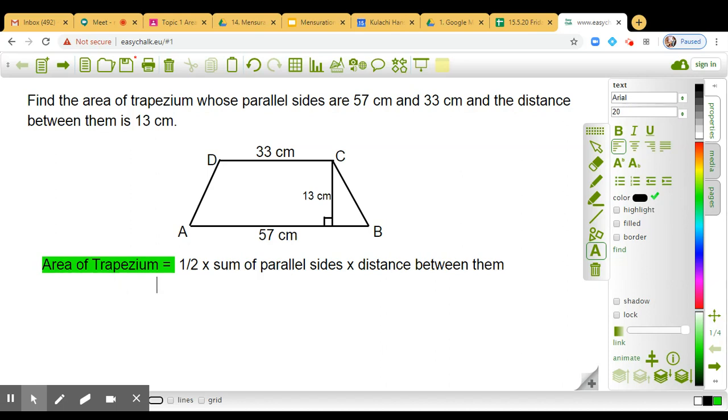Now you tell me, what are the dimensions of the parallel sides here? So half into 33 plus 57 into the distance between them which is 13 units.